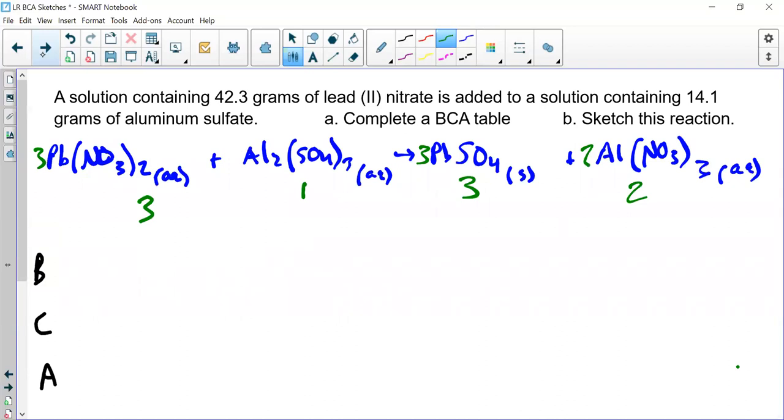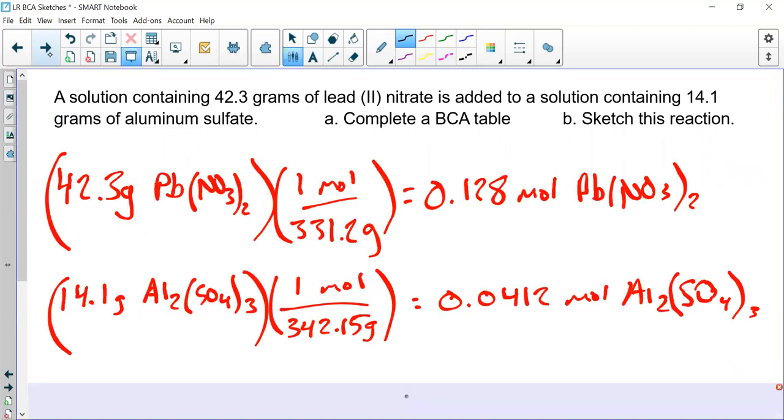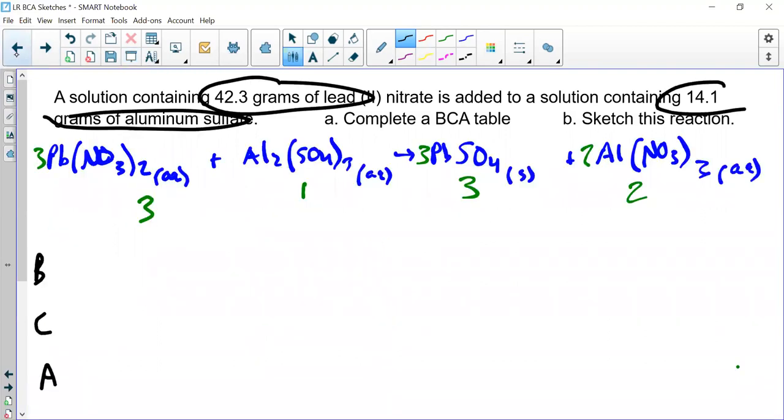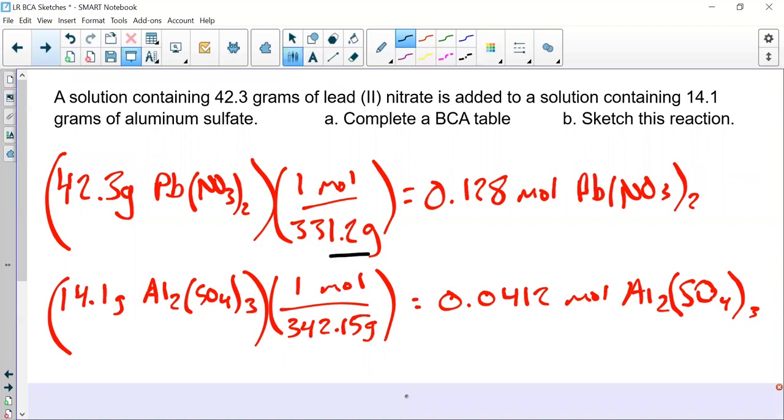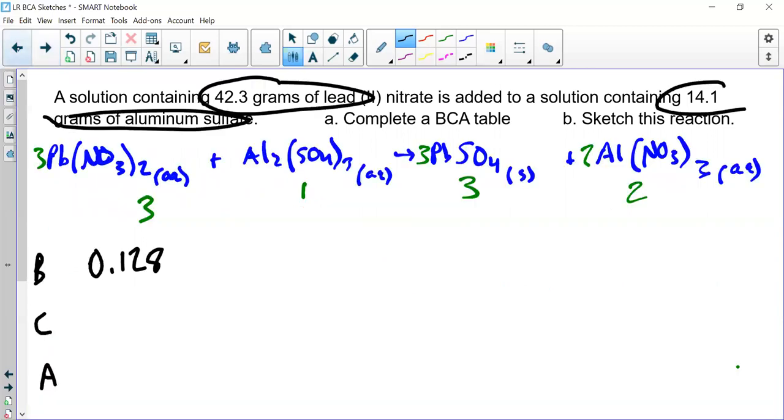I like to rewrite my coefficients below: 3, 1, 3, 2. On the left side we say BCA which stands for before, change, and after. Now we need to fill in the moles we have of all four of these terms before the reaction takes place. What are we given in this problem? We're given grams of lead(II) nitrate and grams of aluminum sulfate. When you're given grams, convert them into moles. I've done the work here. We use molar mass to get 0.128 moles of lead(II) nitrate, and 0.0412 moles of aluminum sulfate.